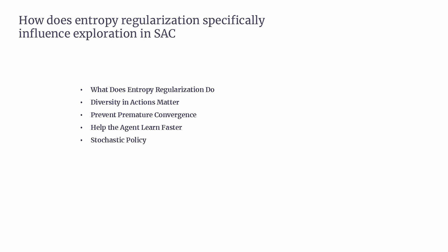SAC's reliance on a stochastic policy means that actions are sampled from a distribution rather than being deterministic, which is crucial for exploration as it enables the agent to try various strategies and adapt to different environments. SAC can also adjust alpha dynamically during training: early on, a higher alpha encourages exploration when the agent knows little about the environment; later, as the agent learns effective strategies, alpha can decrease, allowing exploitation while still exploring occasionally. In summary, entropy regularization enables SAC to balance exploration and exploitation by encouraging randomness in action selection, preventing premature convergence, exposing the agent to more states and rewards, and accelerating learning.